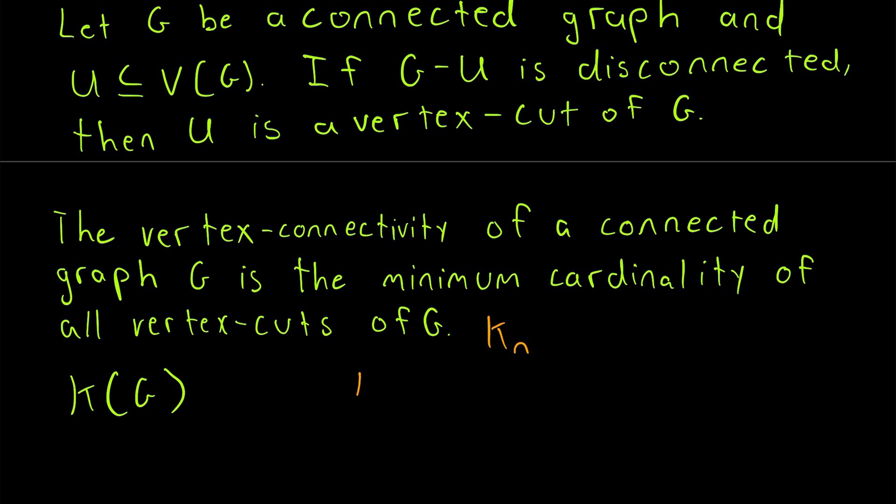Kappa of the graph. We define the vertex connectivity of a complete graph on N vertices to be equal to N minus 1. Once you delete N minus 1 vertices from a complete graph on N vertices, you'll be left with a trivial graph.